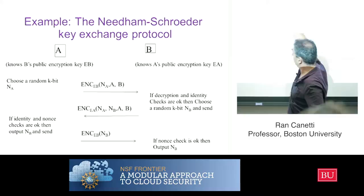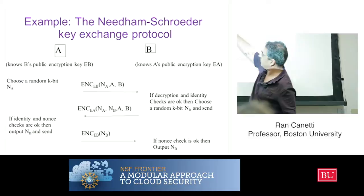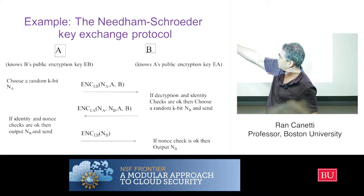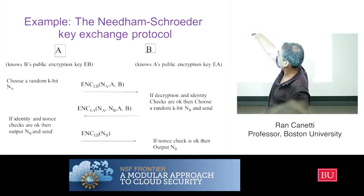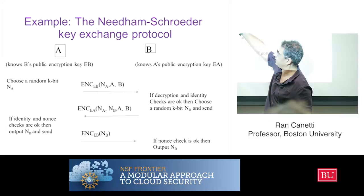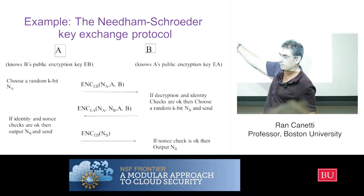B decrypts, finds the nonce, and sends it back: encrypts the nonce back to A together with B's own nonce NB, along with the identities A and B. This somehow proves to A that B really received the message, because B is the only one who can decrypt — he's the owner of the secret key — and he puts it back with his own nonce.